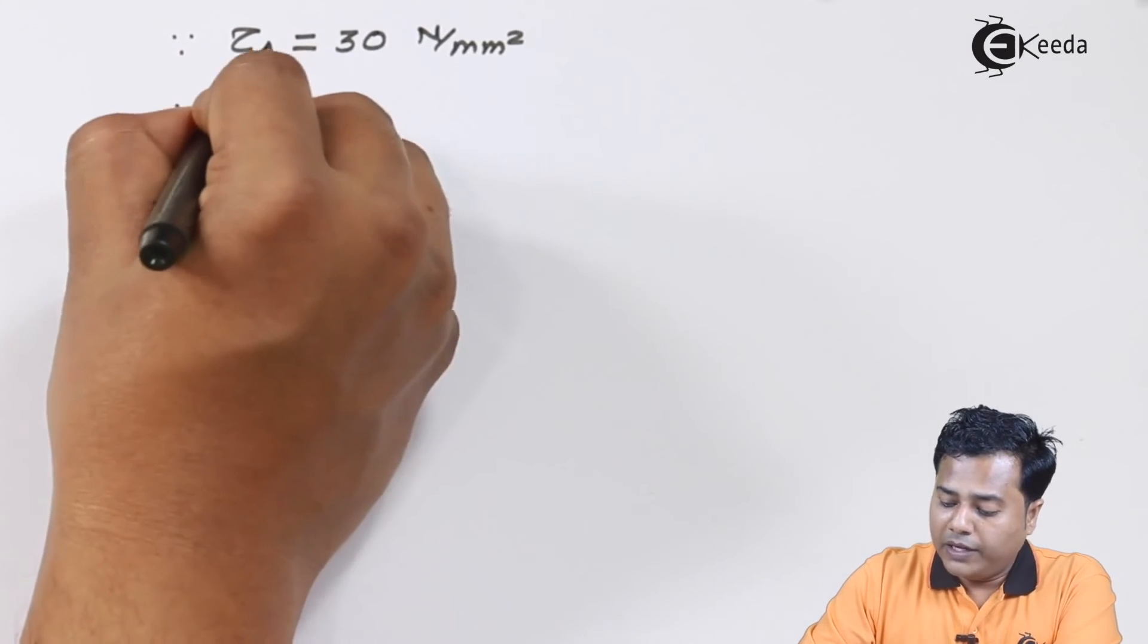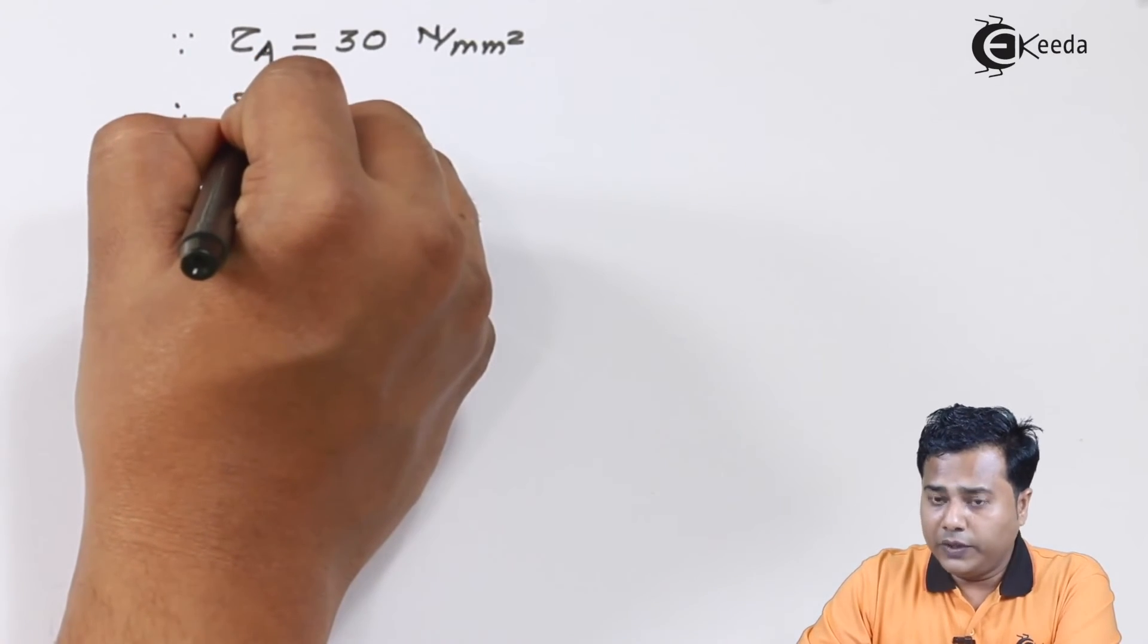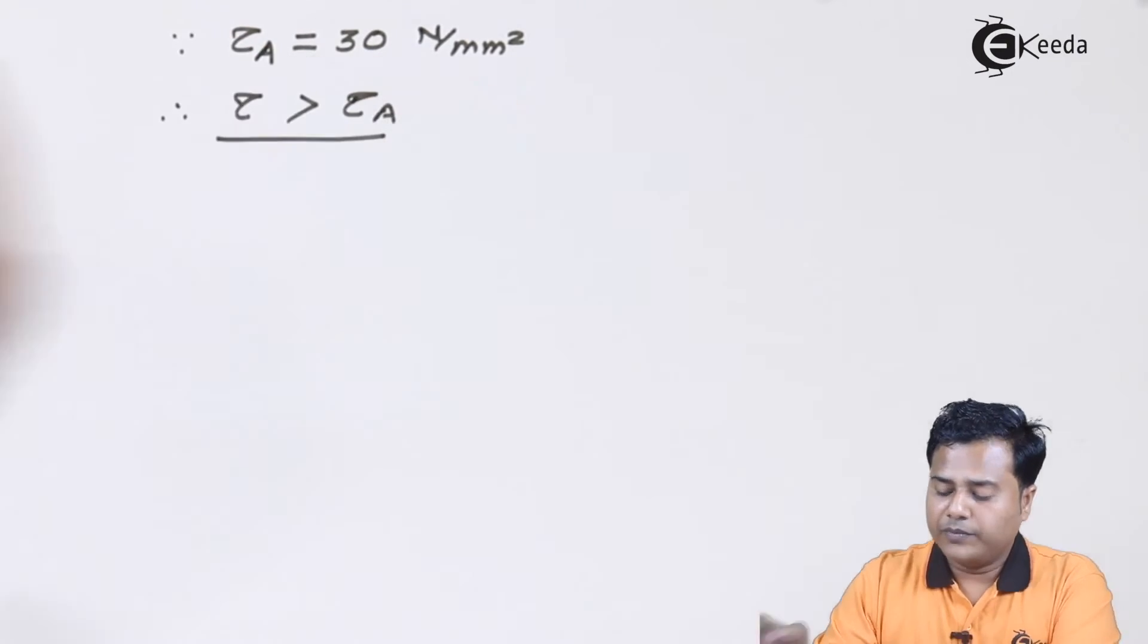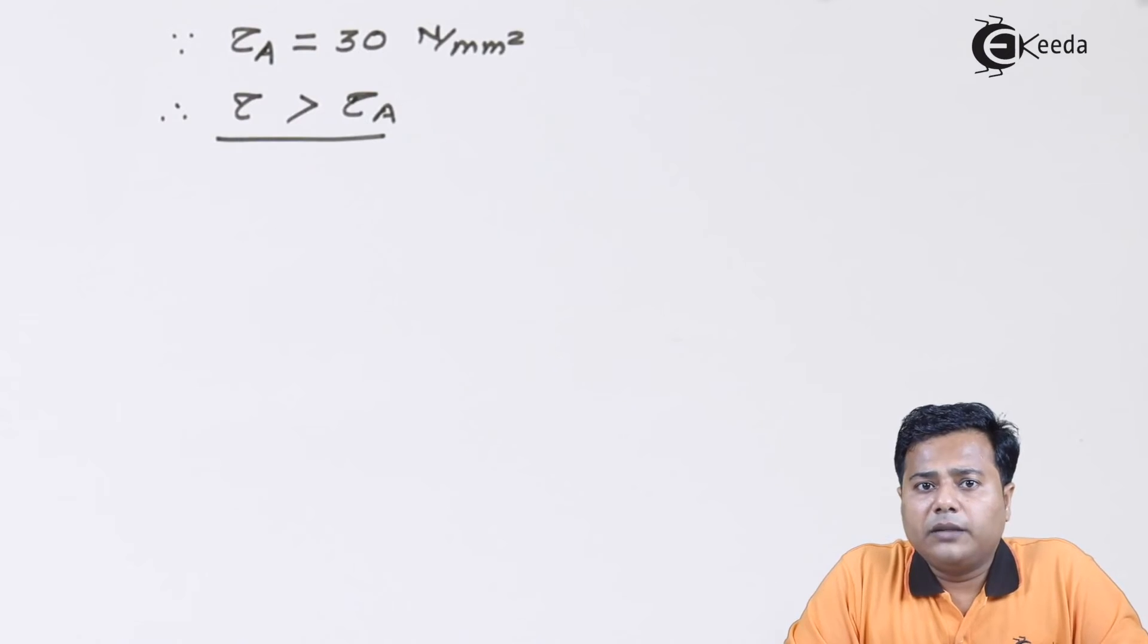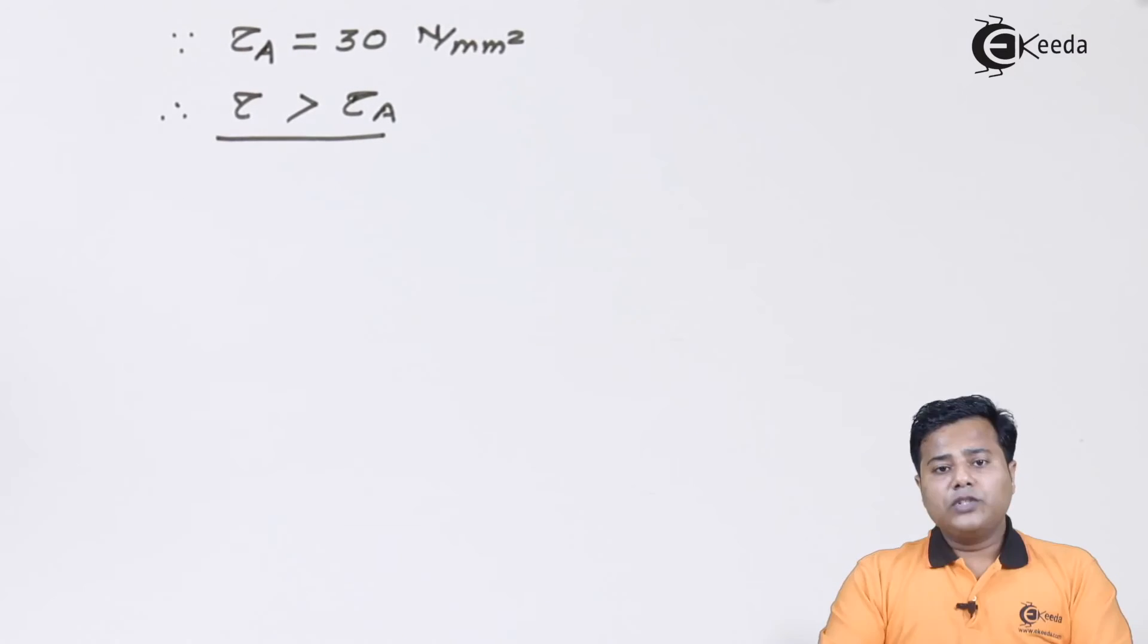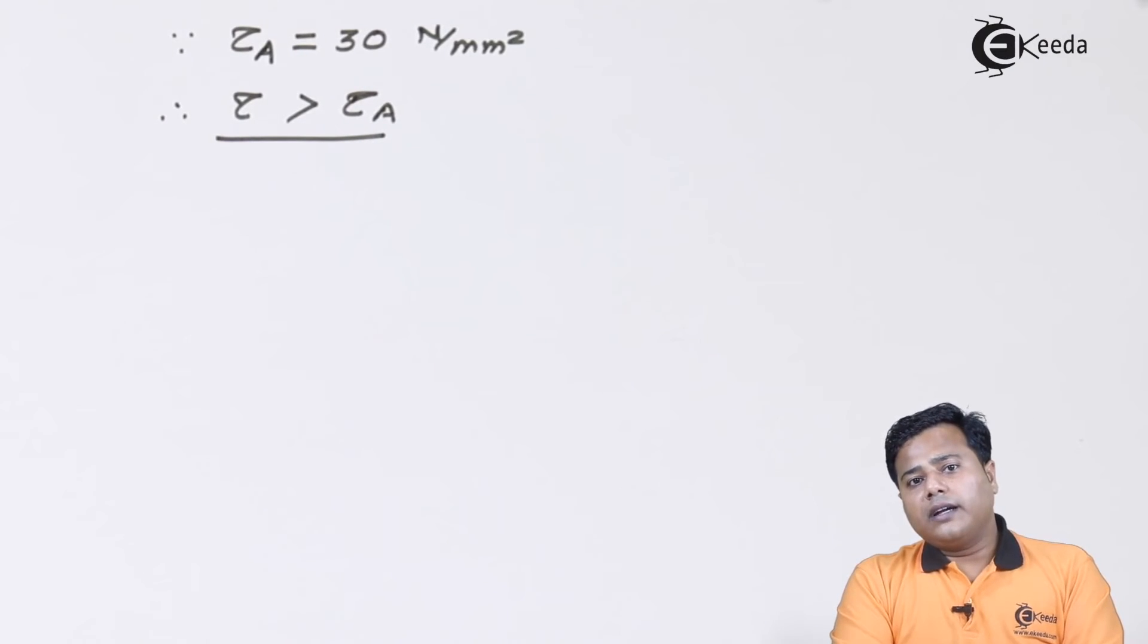Hence the value of τ which is right now existing is greater than the τ allowable. So that means the pin end or the eye end that we have right now is facing τ which is different than the allowable value. In this case the eye end is going to fail for sure under shear.